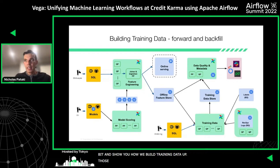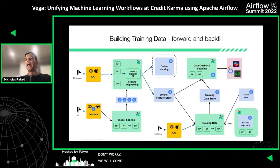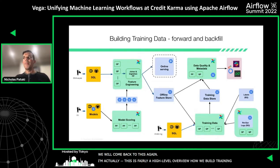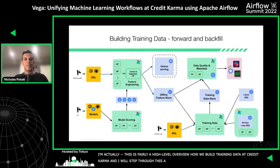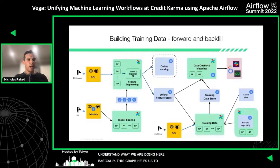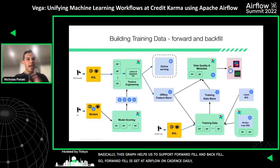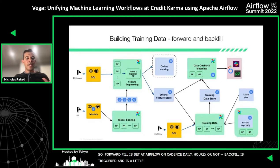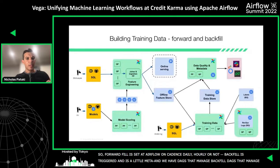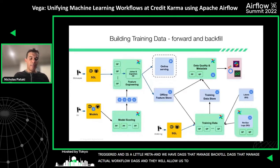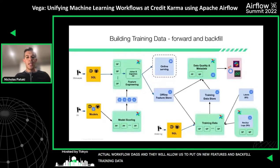Now that I've oriented you on the components of a machine learning workflow and the classes that support them, I want to drill down and show you how we build training data. This graph helps us support forward fill and backfill. Forward fill is just set on Airflow on some cadence — daily, hourly, or similar. Backfill is triggered — it's a little bit meta in that we have DAGs that manage backfill DAGs, which manage our actual workflow DAGs. These allow us to add new features and backfill the training data, apply bug fixes and patches, and they're triggered on demand.